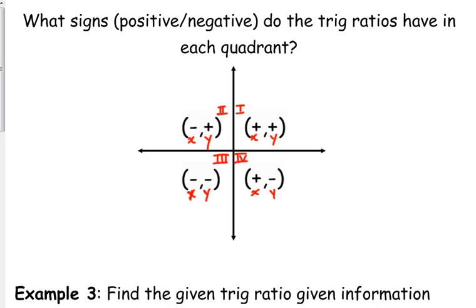We just talked about the fact that the opposite is the y, the adjacent is the x, and we learned that the hypotenuse is always positive. So let's look at the first quadrant. If we're setting up our sine ratio — sine is opposite over hypotenuse — the opposite or y is positive, so sine is positive. Cosine is also going to be positive, and tangent is going to be positive. So in the first quadrant, all of our trig ratios are positive.